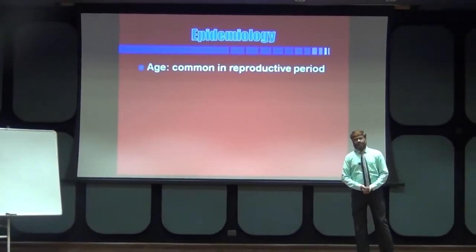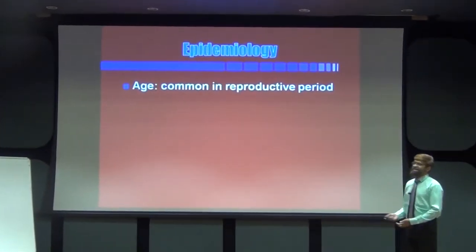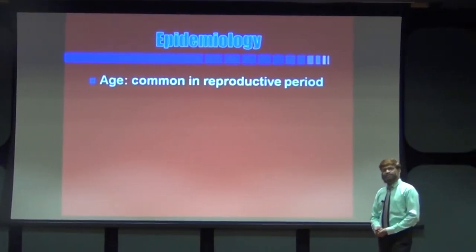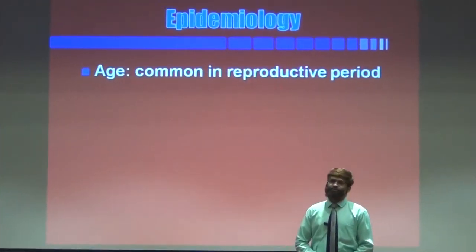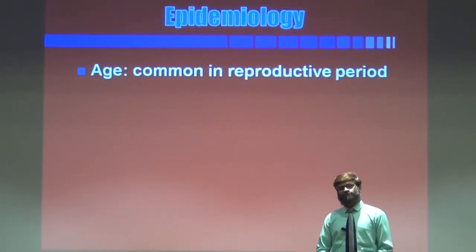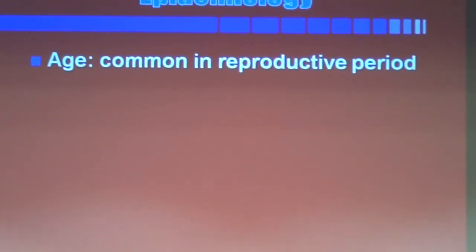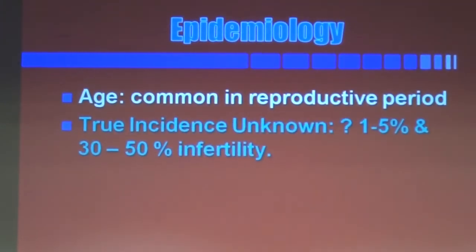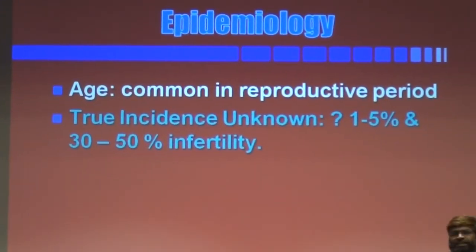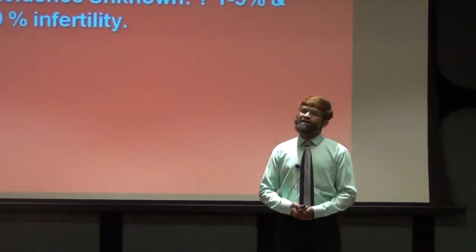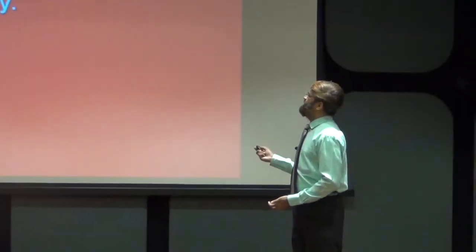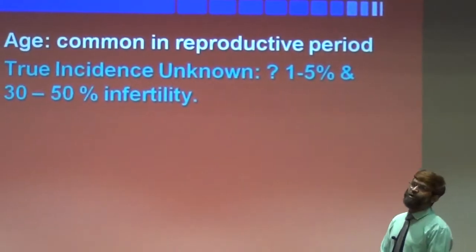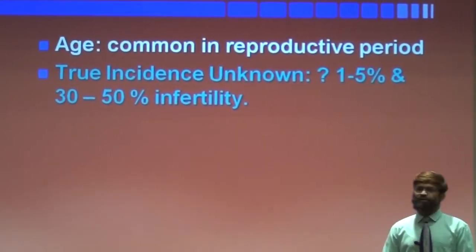In epidemiology, first and foremost is age. Endometriosis is seen only during the reproductive age group, which gives us the idea that it is mainly based on estrogen. So estrogen becomes the main cause for endometriosis. The true incidence of endometriosis is not exactly known because there are many cases which remain asymptomatic. Approximately, roughly, it is said 1 to 5 percent of cases throughout the world are females who present with complaints of endometriosis.